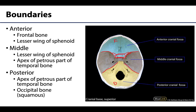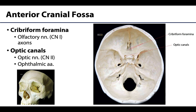There are many foramina, or holes, in this region, which are passageways for neurovasculature to enter and exit the skull or move to different parts of the head. During development, bone forms around the neurovasculature, so these foramina vary in size and shape depending on what is traversing them — bigger structures produce larger foramina. In this video we will focus on what is traversing the foramina.